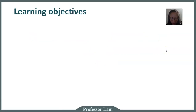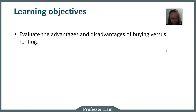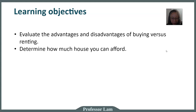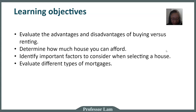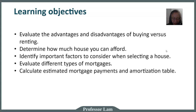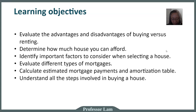First, we're going to look at the advantages and disadvantages of buying versus renting, and figure out exactly how much of a house you can afford. While you are ready to look for a house, we're going to list all the important factors to consider. Then we'll dive into different types of mortgages, do actual mortgage payment calculations, and introduce the concept of an amortization table — things you need to know before you talk to the bank. Finally, we'll detail all the steps involved in buying a house.